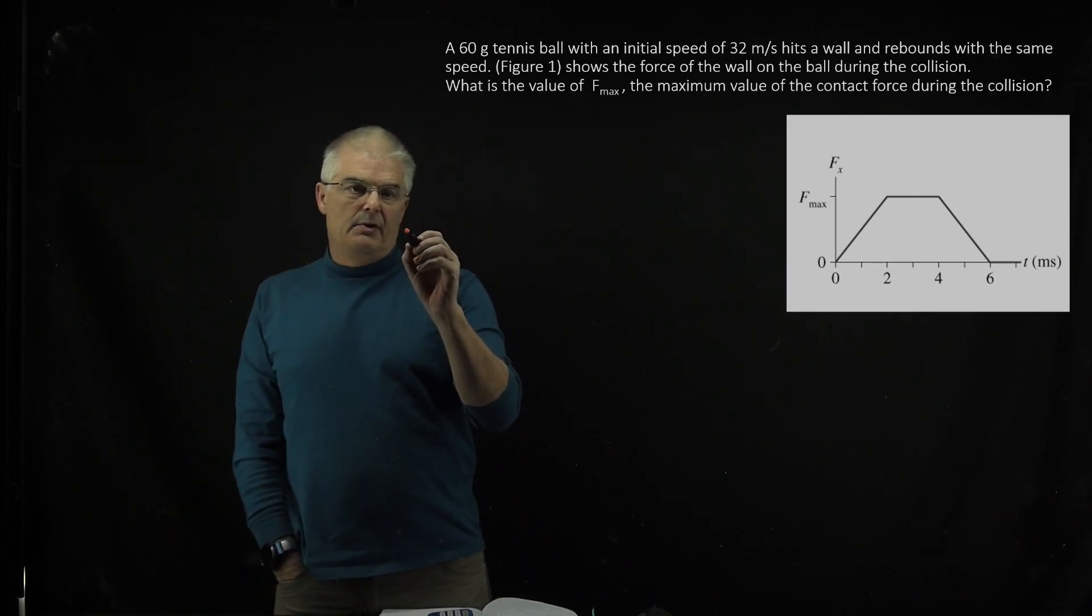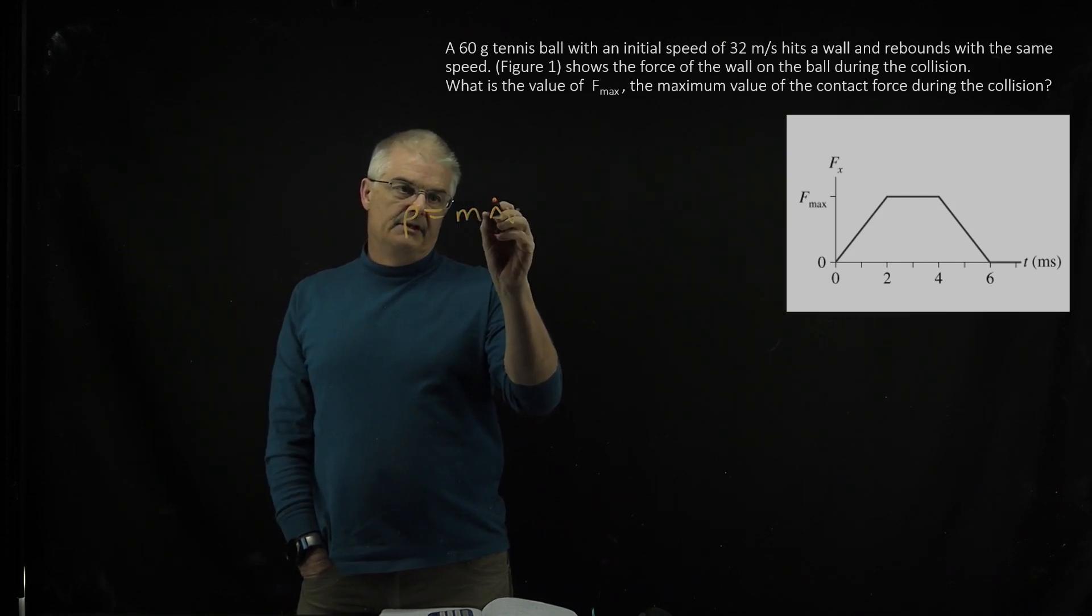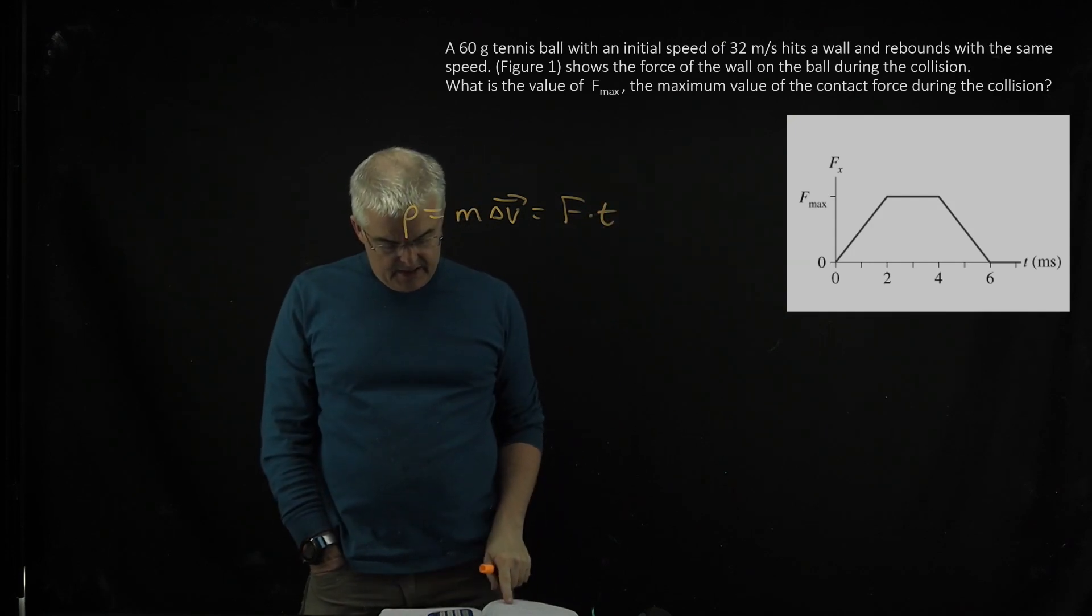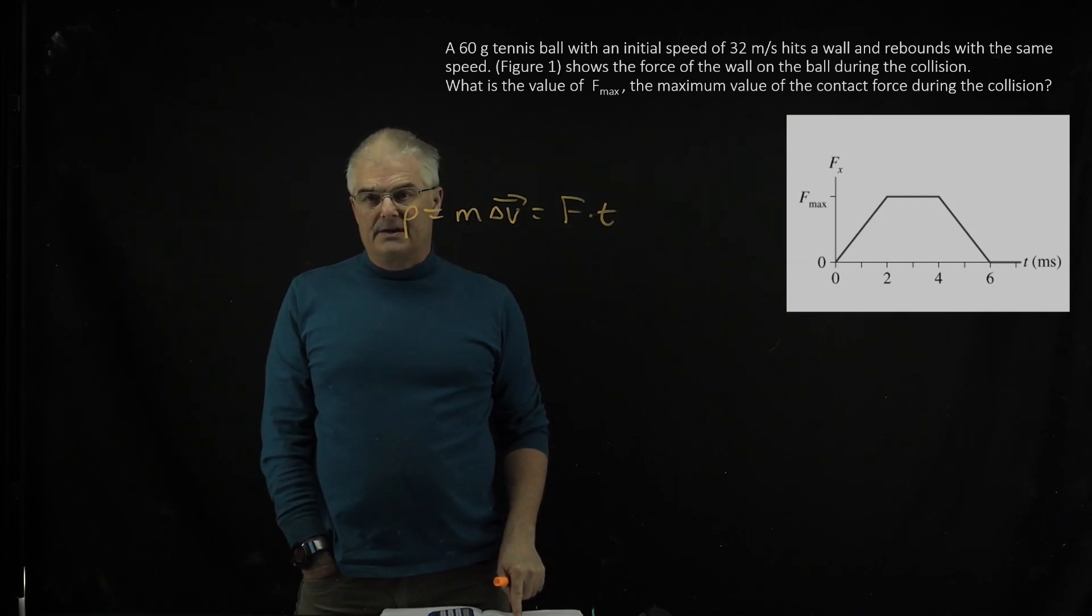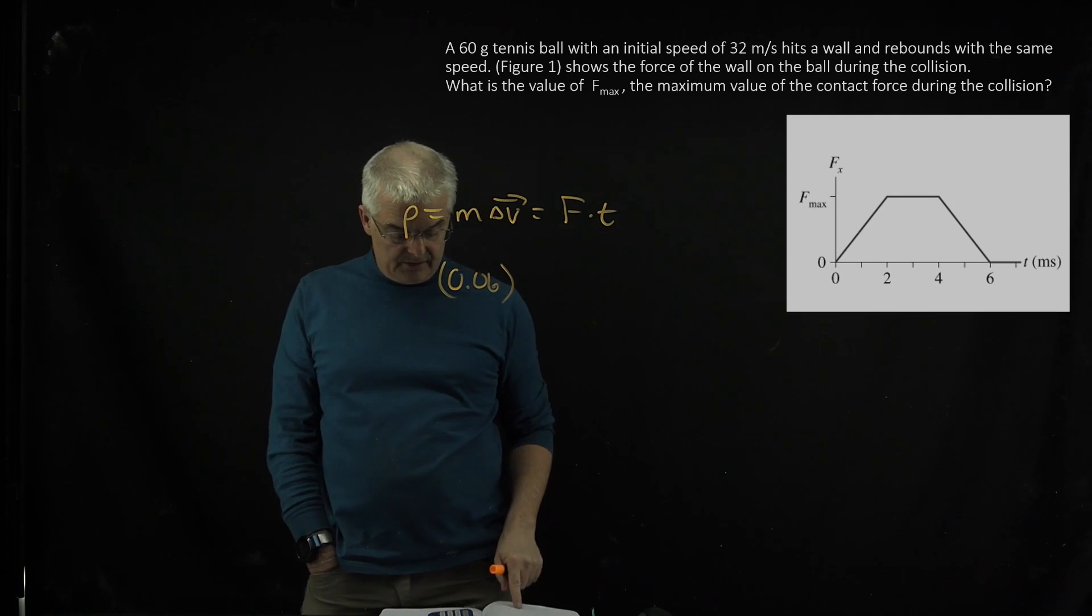So, your main equation is P equals M delta V equals force times time. And so, you know the mass of the tennis ball is 0.06 kilograms, 60 grams.